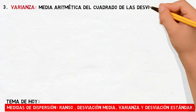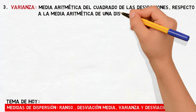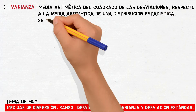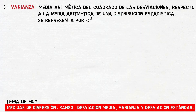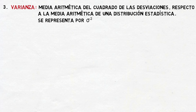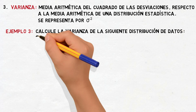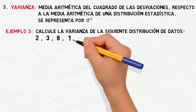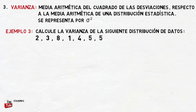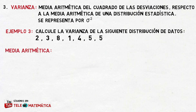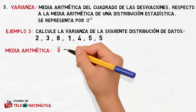The third classification is variance, defined as the arithmetic mean of the squares of the deviations compared to the arithmetic mean of a statistical distribution. It is represented by the letter sigma squared (σ²), where sigma is a Greek letter. Let's see an activity: calculate the variance of the following distribution of data — 2, 3, 8, 1, 4, 5, and 5.